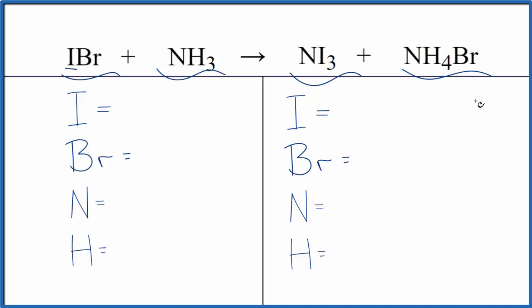Let's count the atoms up and balance the equation. We have one iodine, one bromine, one nitrogen, and three hydrogens. In the products, we have three iodines and one bromine.